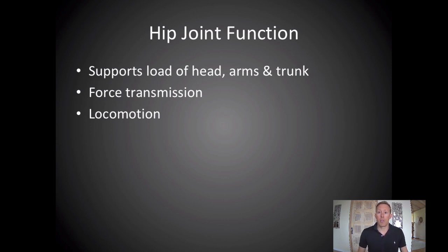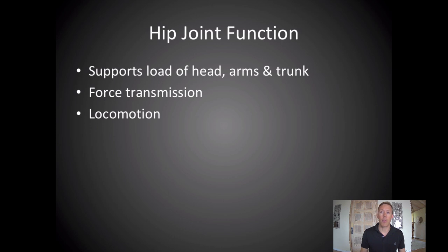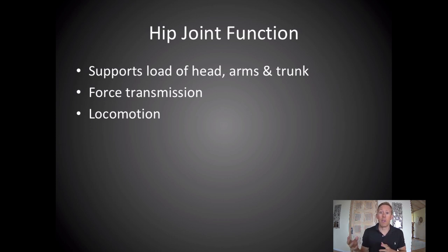And then locomotion — we'll look at the gait cycle after these lower extremity lectures. The hip joint and the muscles around the hip are really important for walking. There are certain normal ranges the hip has to go through in both flexion and extension, and the way that muscles like gluteus medius and gluteus minimus work to stabilize our pelvis as we walk. We'll look at those in more detail in the gait lecture.